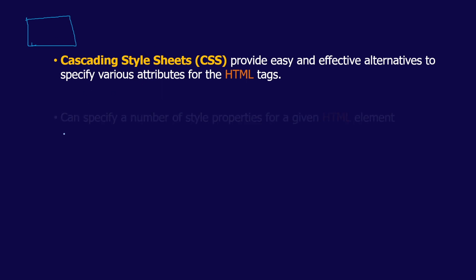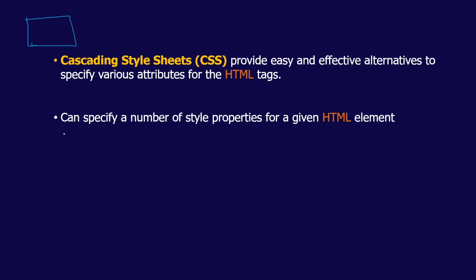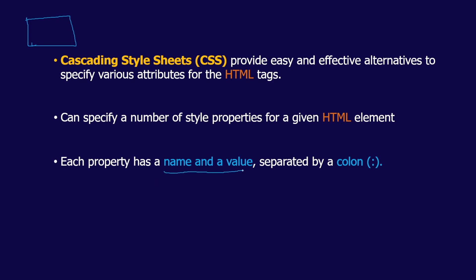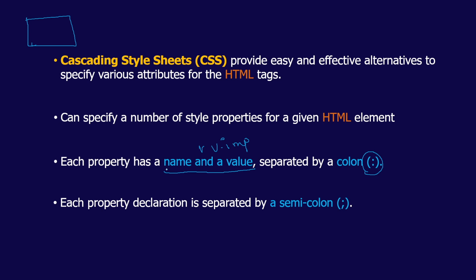You can specify a number of style properties for a given HTML element. Each property has a name and a value separated by a colon — this is very important because all CSS properties will always have a name-value pair. Each property declaration is separated by a semicolon. So between the name and the value you use a colon, and at the end of each property you add a semicolon.